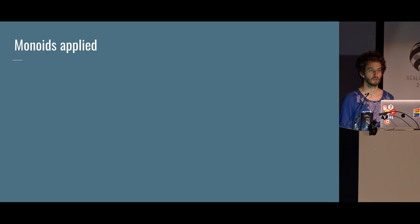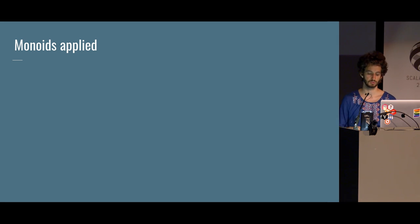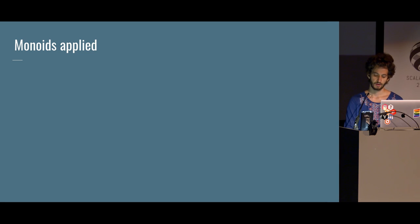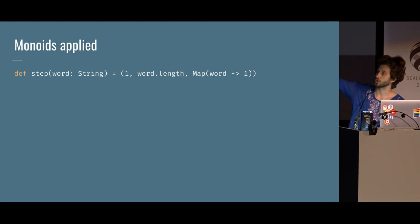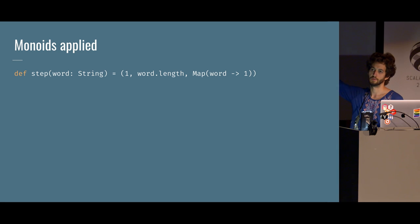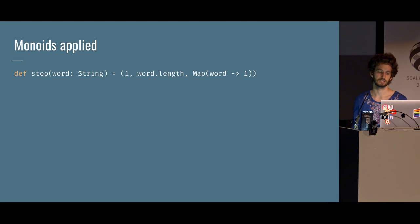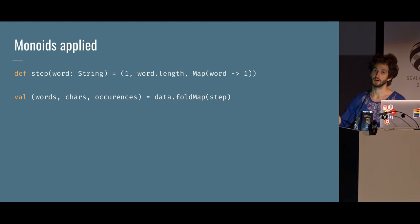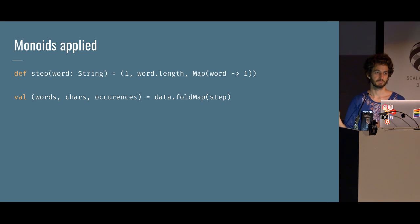What can we do with these beyond simple folding? The cool thing about monoids is that in tuples they are composable. If we want to do a word count on a list of words, we can use a step function that maps any word to a tuple of: one (word count), that word's length (character count), and a map from that word to one (occurrences). Combining all of these gives us the total number of words, total characters, and occurrence of each word.